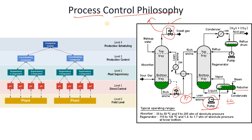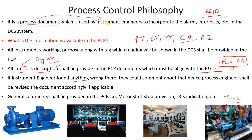As a DCS operator or when building the DCS, safety comes first and the process should run efficiently. That is why we prepare the process control philosophy. The process engineer must ensure it is aligned with the latest or as-built P&ID.